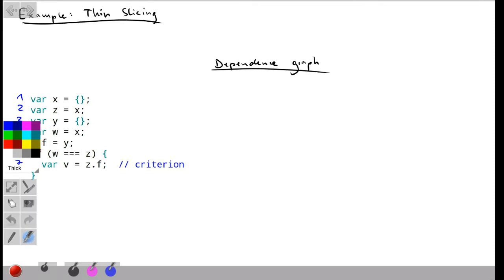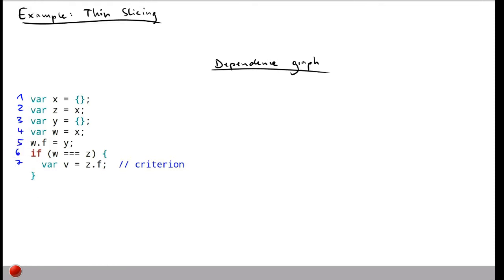To compute the dependency graph, we start by writing down the nodes corresponding to all seven statements. The next step is to introduce edges into the graph. As defined, the dependencies that really matter for thin slicing are the direct data dependencies. I'll also note the other data dependencies and control flow dependencies that are ignored, just so you can see what is not included in this dependency graph.